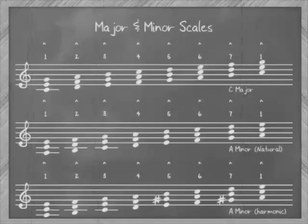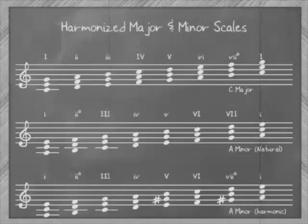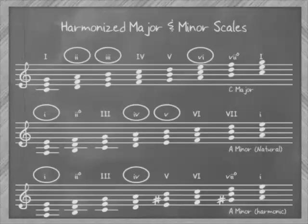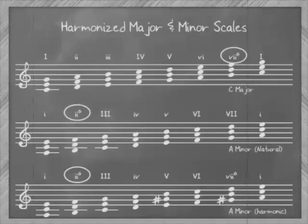To harmonize these scales, we first build basic triads by adding intervals of a third and a fifth above each degree. Then we replace the Arabic scale degrees with Roman numerals to indicate the qualities of the chords we've created. The upper case numerals are major chords, the lower case are minor, and the lower case with the little circle next to it is diminished.